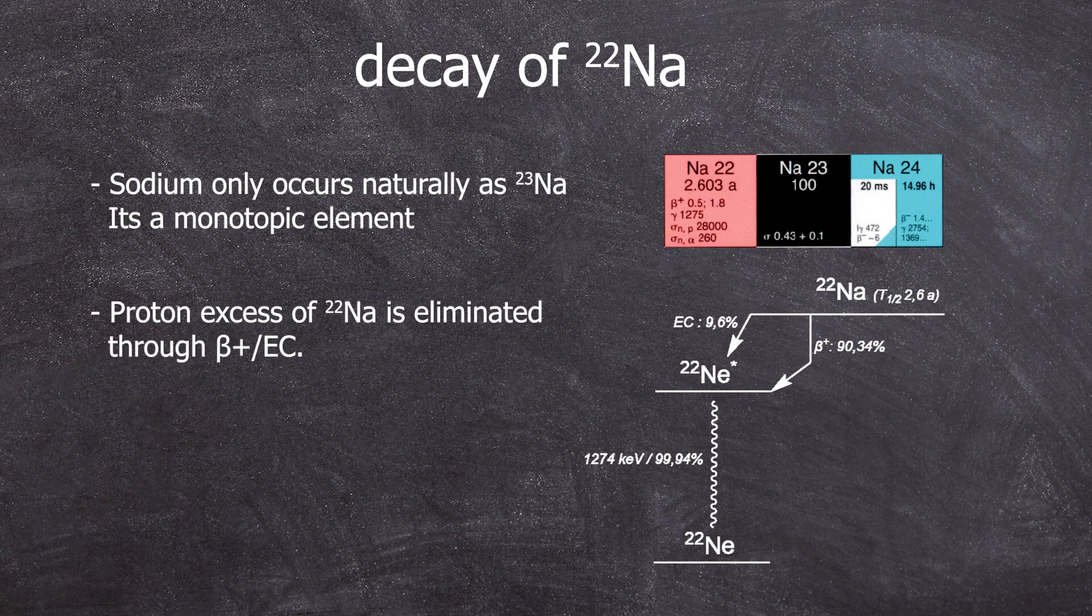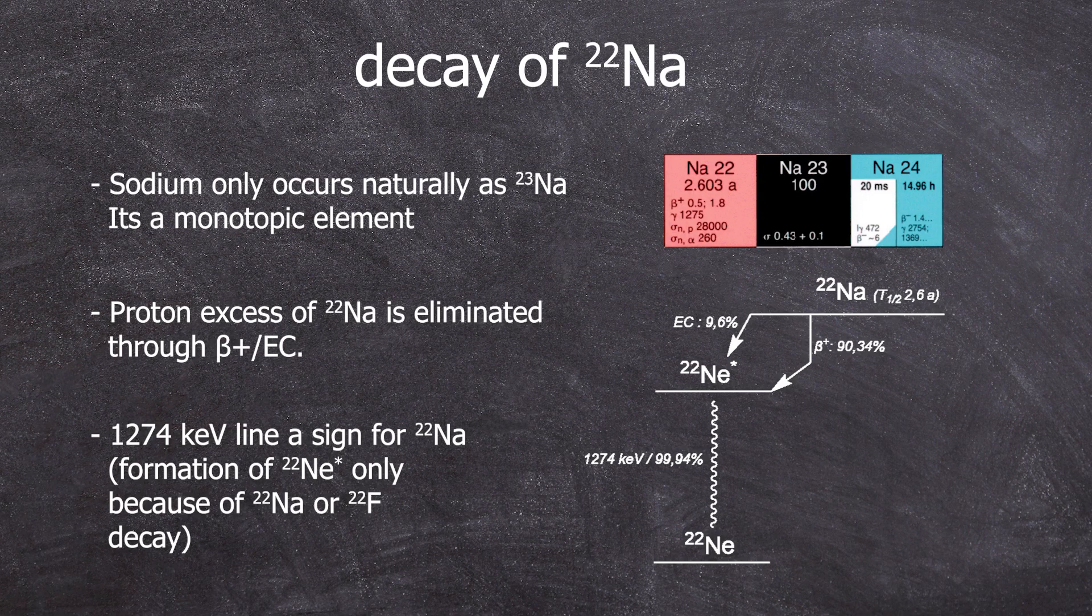During the sodium decay, whether it's beta-plus or electron capture, an excited neon-22 nucleus is formed, which emits a 1,274 keV gamma ray to reach its ground state.